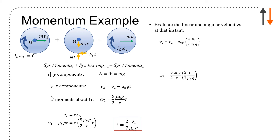Substituting for the linear and angular velocity and solving for the time at which it stops: omega 2 equals five-halves times mu_k times g over r, times two-sevenths times v1 over mu_k times g. The mu_k and g terms cancel, giving a final angular velocity. And v2 equals five-sevenths v1.